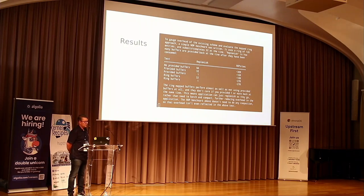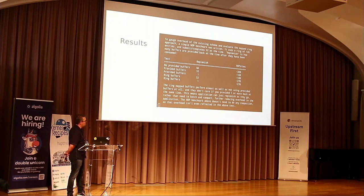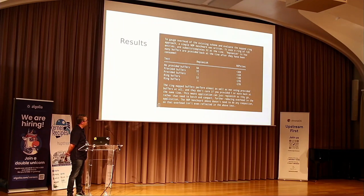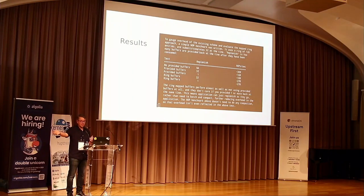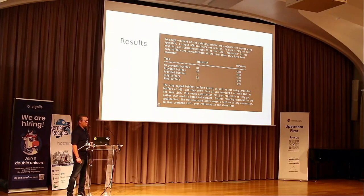Benchmarks comparing classic provided buffers with the new ring-provided buffers: in a synthetic test doing NOP operations — where getting the buffers is a substantial part of the work — classic provided buffers drop performance by 50–66%. With ring-provided buffers you end up very close to the theoretical performance of doing NOPs. The other big improvement is replenishing buffers back to the kernel one at a time without any performance drop. Previously with classic buffers, applications needed to batch and bundle updates to hit their desired performance.